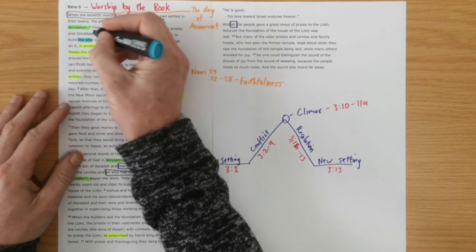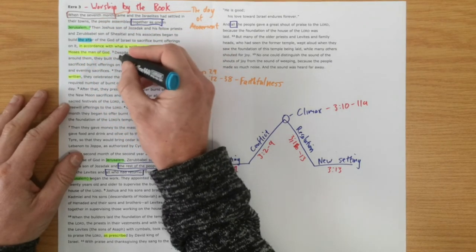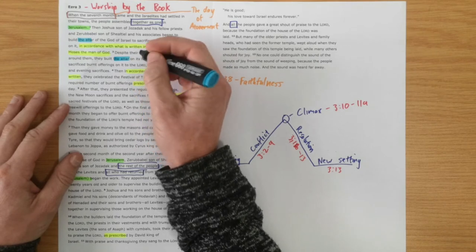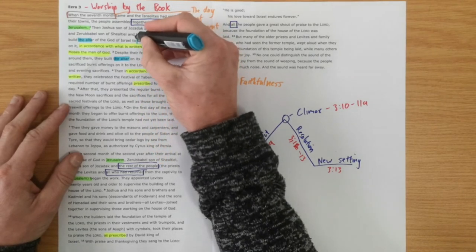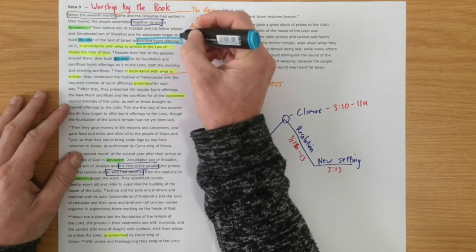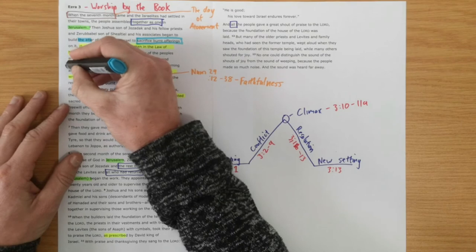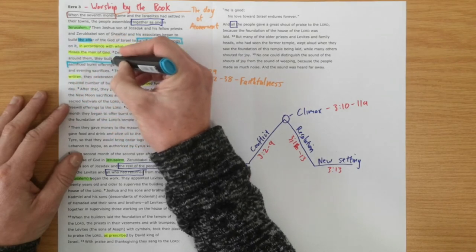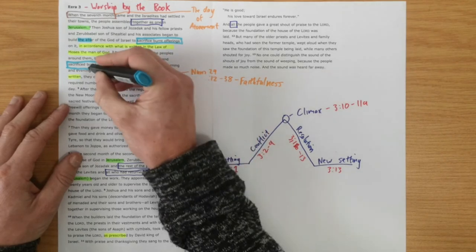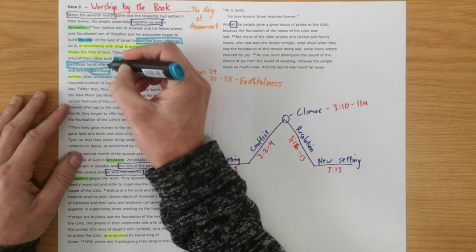And you can read all about it in Numbers 29 verse 12 to 38. And this is a festival celebrating God's faithfulness. And they are doing all of this by the book. They know that this holy month, a month where they are rejoicing in God, but a key part of that month is sacrifice. And so they go back and build the altar. They build the altar on its foundation, so again showing they want to do it by the book. And on this altar, what's the point of an altar? Well it's to offer burnt sacrifices.